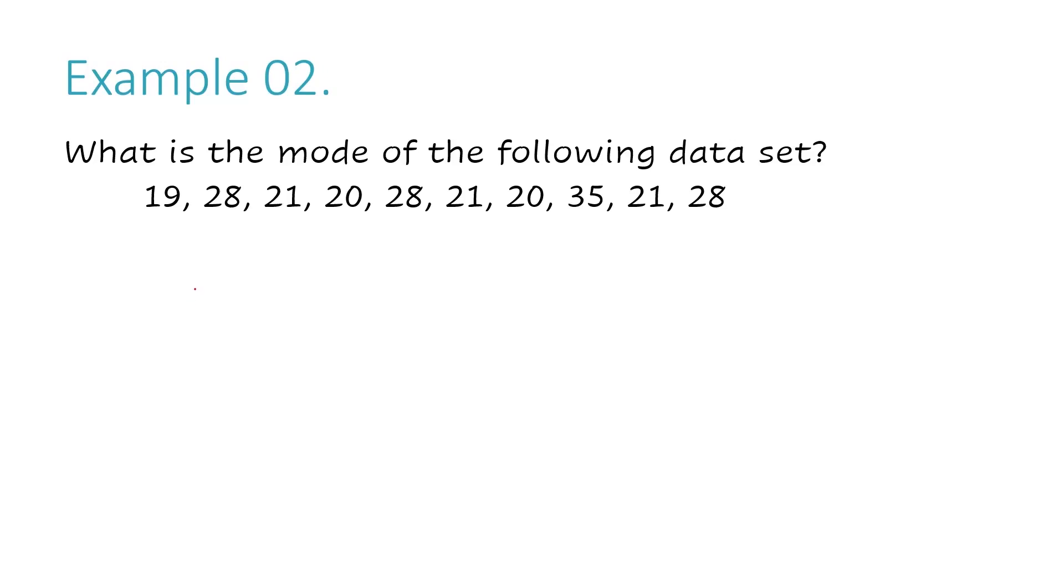I'll start: I have the number 19 once, then 28—I see it three times as I go through. Next is 21, which also appears three times as I cross them off and mark them. Then 20 appears twice, and finally 35 appears once.